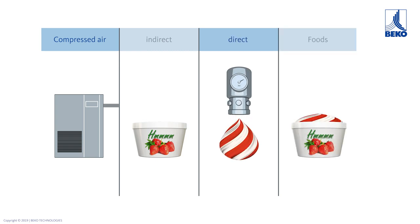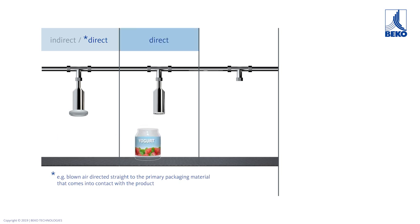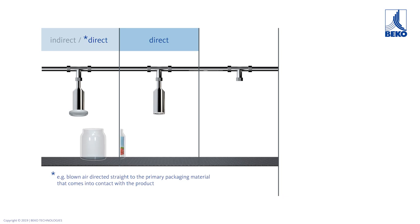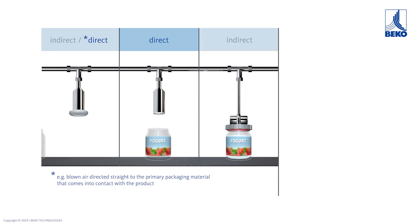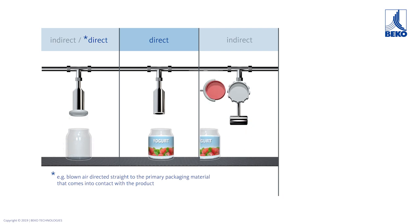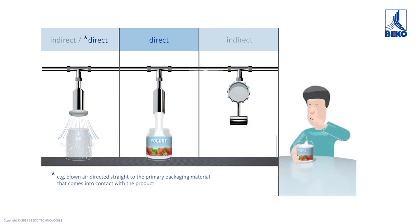A high degree of care is required for this process. In indirect contact, for example, the cleaned yogurt jar is dried with compressed air. Direct contact occurs when the product is filled with compressed air. Finally, the closure of the jar is transported with compressed air and closed.